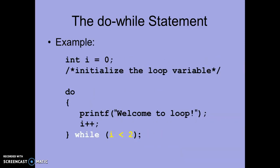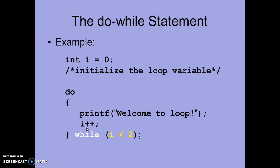Now take an example. Here we have 'int i = 0' — i is a variable of type integer initialized with value 0. We have written 'do' followed by curly braces. Within the curly braces, the first statement is 'printf("welcome to loop")' and the second statement is 'i++'. The first statement displays the message 'welcome to loop' and the second statement increases the value of i by 1 using the increment operator. After closing the curly braces we write 'while (i < 2)' followed by a semicolon.